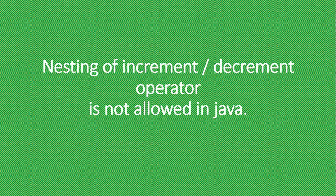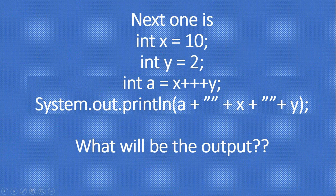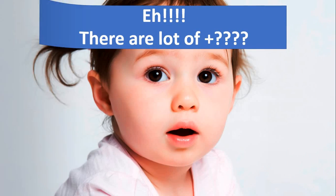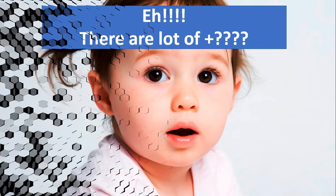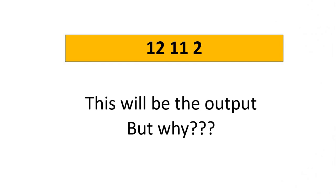So the next question: we have variable x with value 10 and y with value 2, and the statement assigns x+++y to 'a', then prints the values of a, x, and y. There are a lot of plus signs — maybe it will produce a compilation error? But for your surprise, it gives the output: 12, 11, 3. Why does it give this output and not a compilation error?